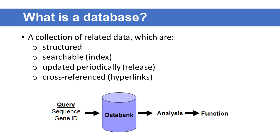Although data retrieval is the main purpose of all databases, biological databases often have a higher level of requirement known as knowledge discovery, which refers to the identification of connections between pieces of information that were not known when the information was first entered. For example, databases containing raw sequence information can perform extra computational tasks to identify sequence homology or conserved motifs. These features facilitate the discovery of new biological insights from raw data.